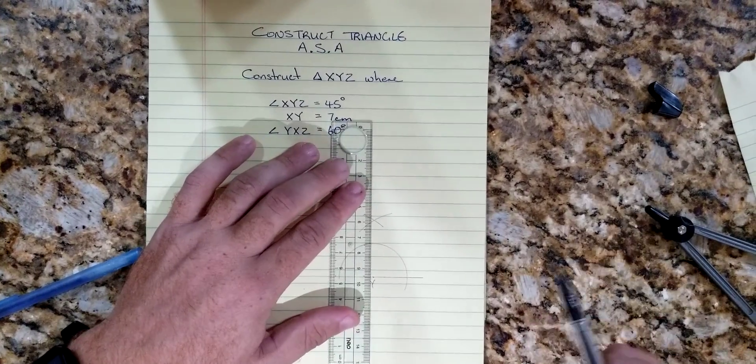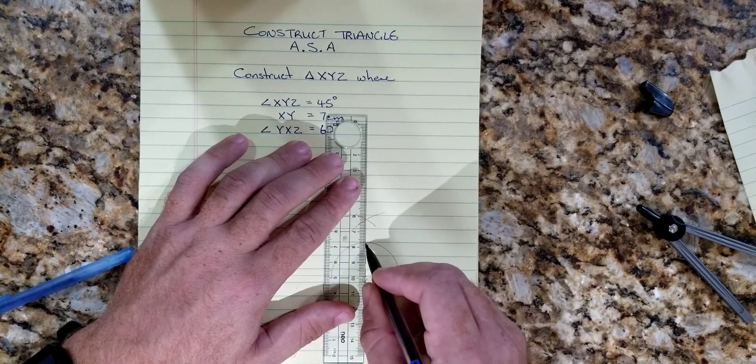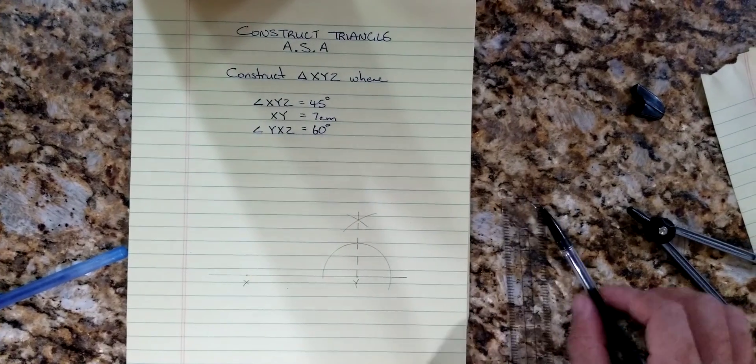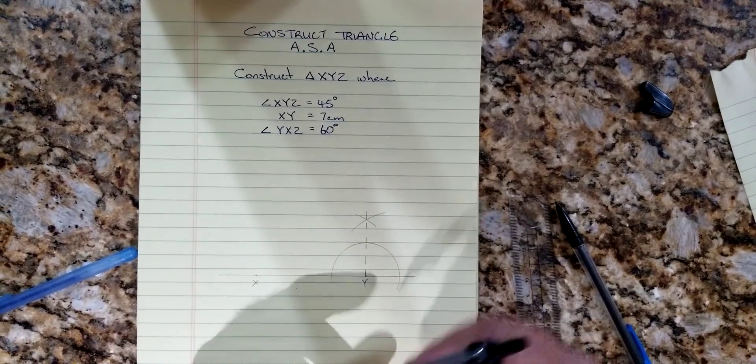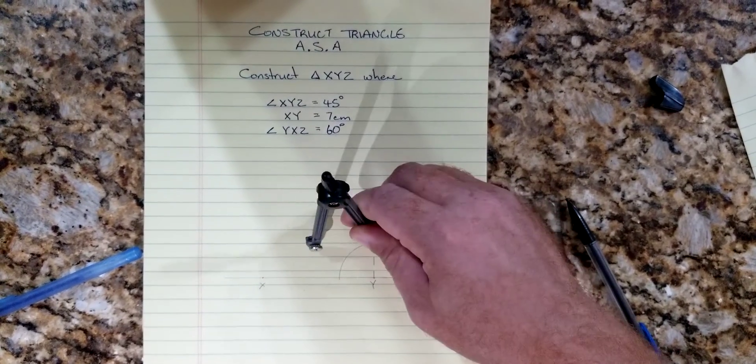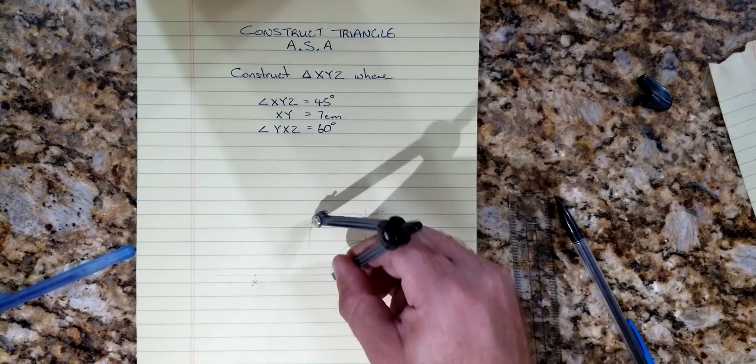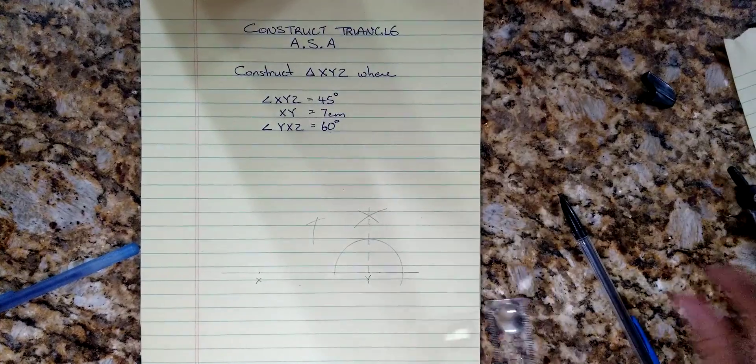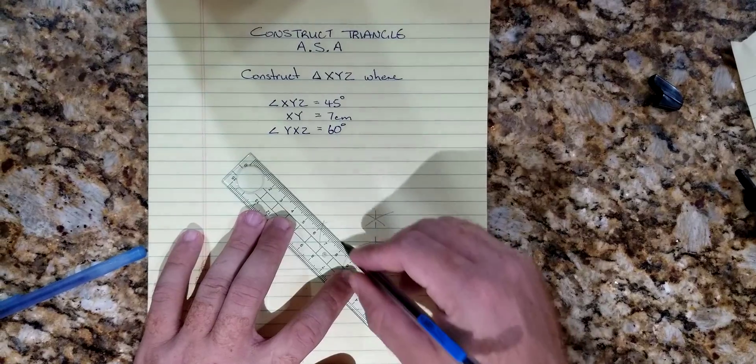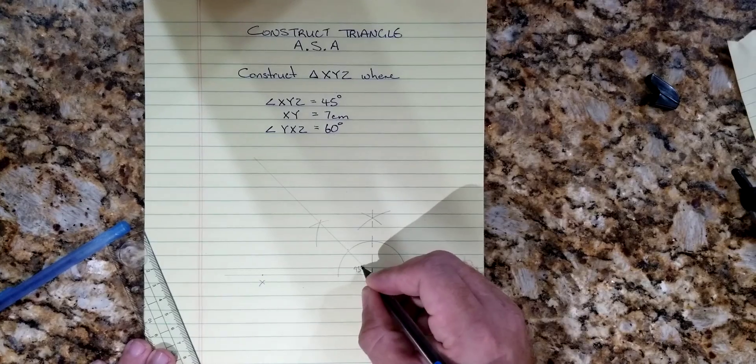Now because we want 45 degrees, we're going to make our 90 degree line a dotted line, a broken line. And then we're going to bisect this 90 degrees to give us 45 degrees. Now that we have that, we're going to draw that line going through the intersection—that's our 45 degrees—and we label our angle.